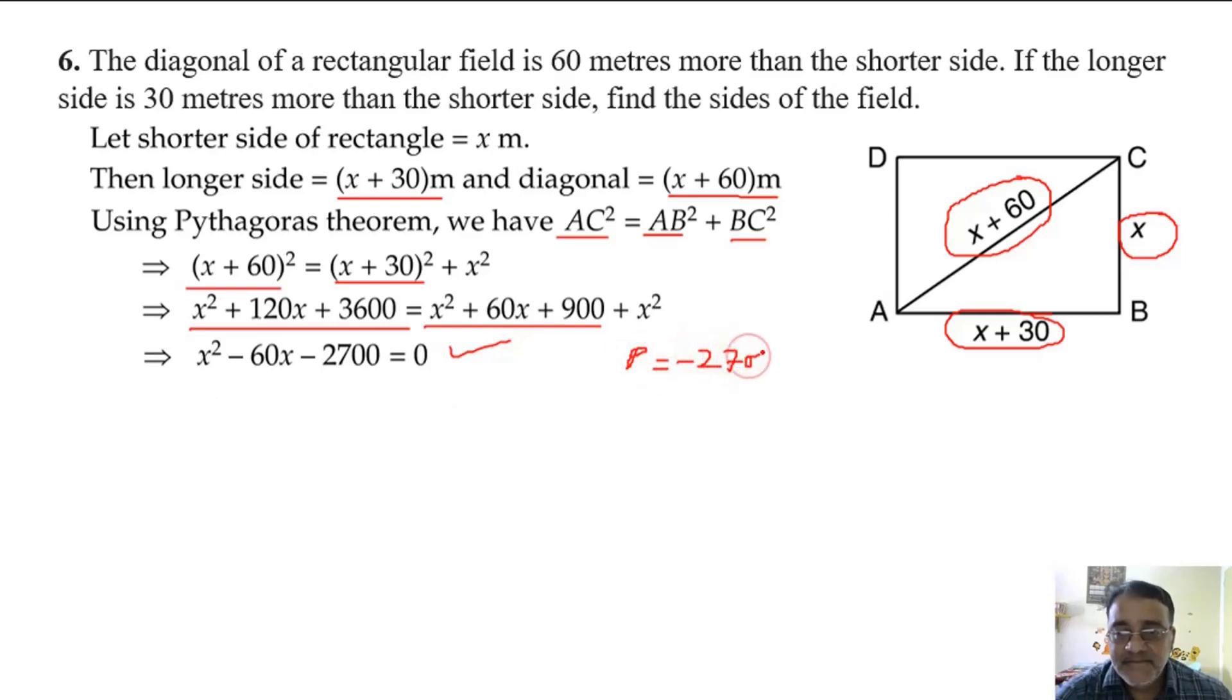And what is the sum? Minus 60. We need two factors of 2700 whose difference should be 60.